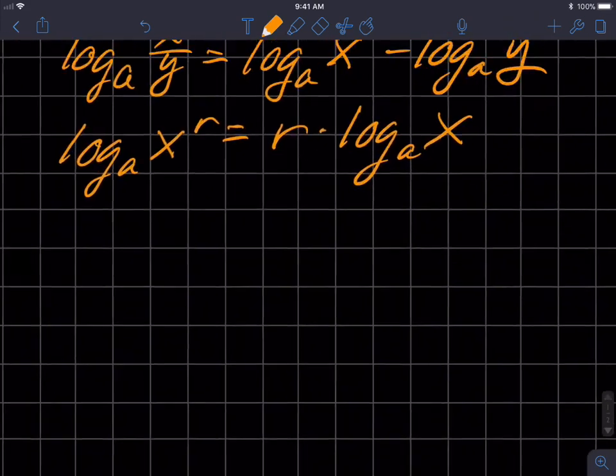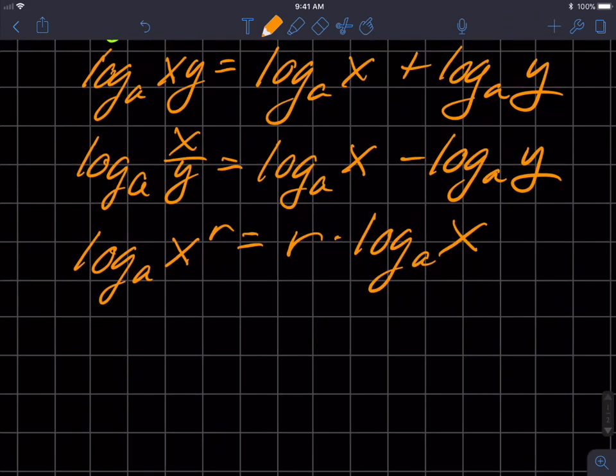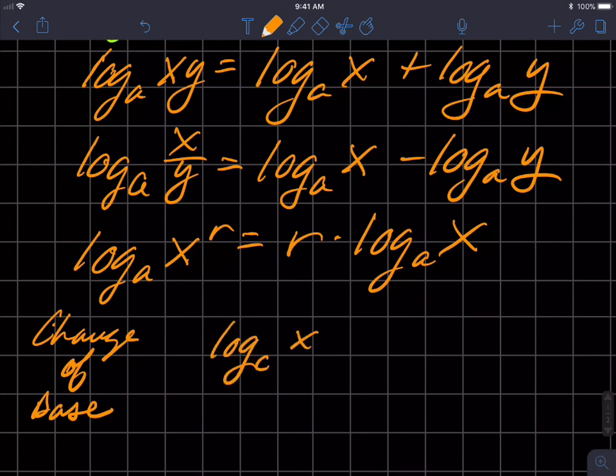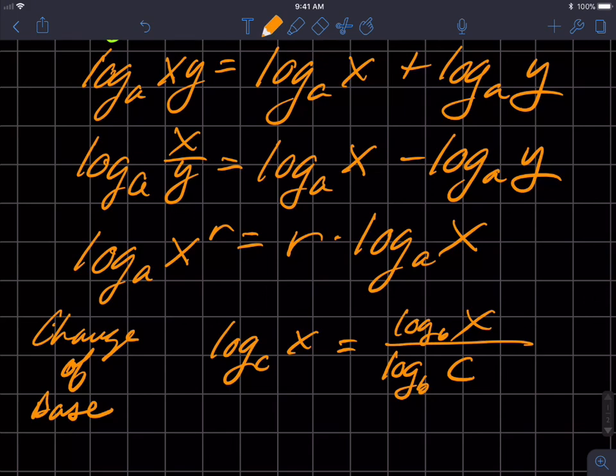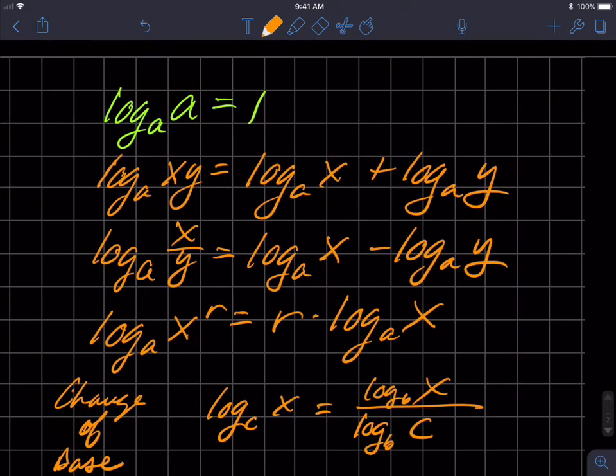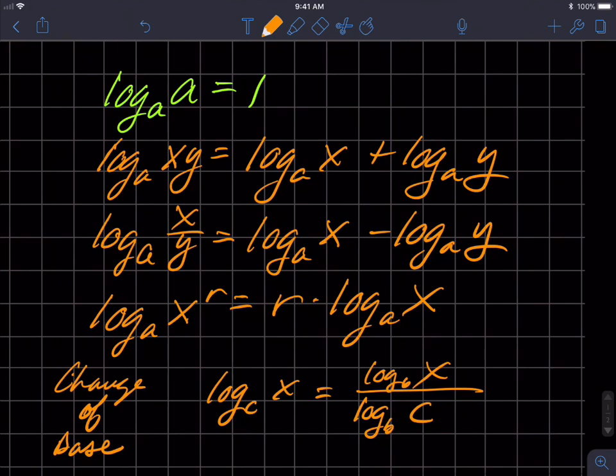And I showed you a little bit how we would use that and let's write it up here. So change of base. And so that's log base C of X is equal to log base B of X over log base B of C. And so that should be it for this video, properties of logarithms. Thank you much. Bye.